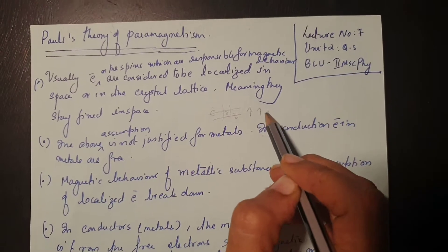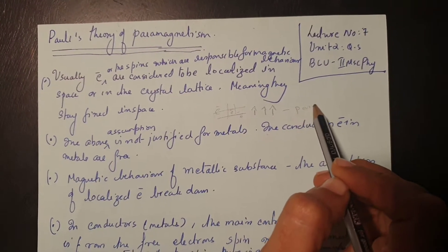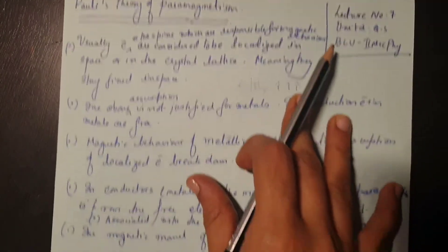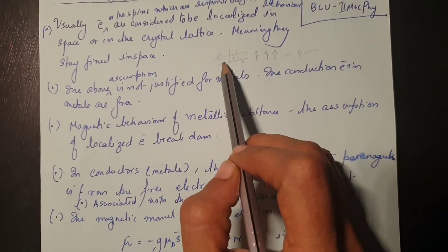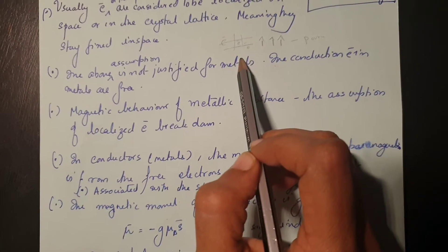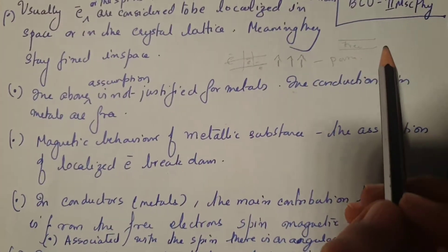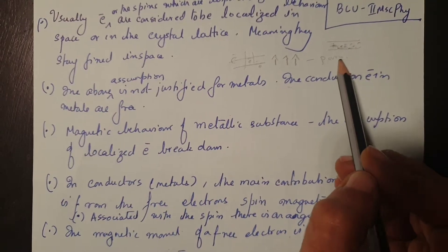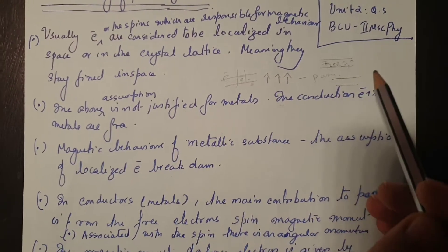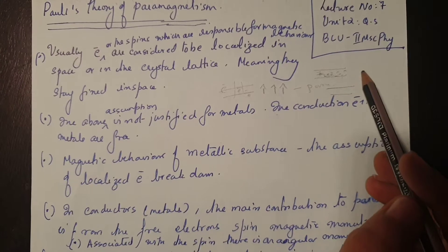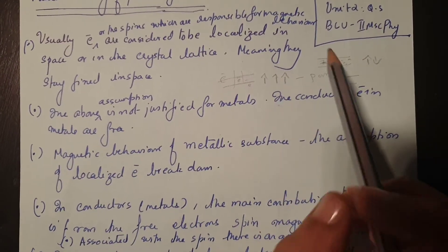Paramagnetism arises due to this orientation, but Pauli's theory of paramagnetism is different. In the case of metals, you cannot consider that electrons are fixed in a crystal lattice — instead, as you all know, we have free electrons in the conduction band. Many electrons are moving around in the conduction band, and when you apply a magnetic field their spins reorient, and the paramagnetism arising due to that is called Pauli's paramagnetism.